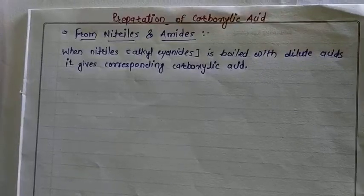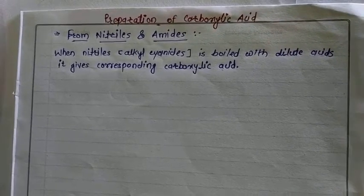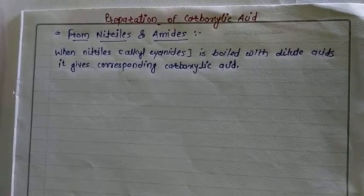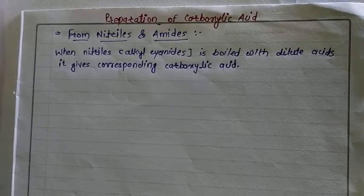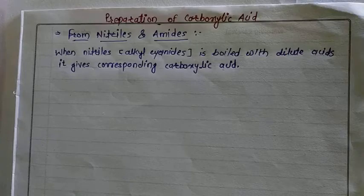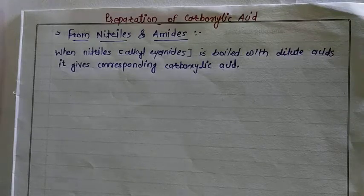Hello students. In this video we discuss the preparation of carboxylic acid from nitriles and amides. When nitrile is boiled with dilute acid like HCl or H₂SO₄, it gives the corresponding carboxylic acid.